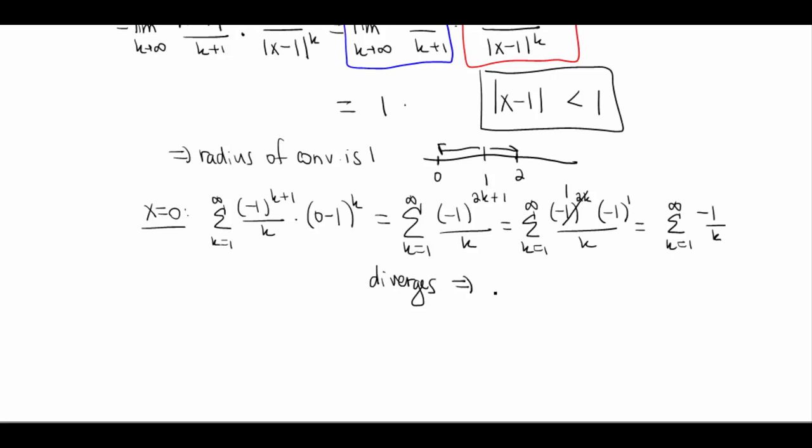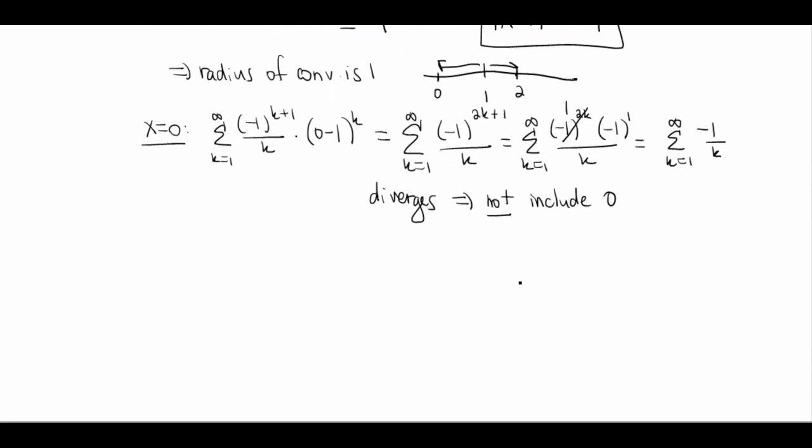So that means we are not gonna include 0. So when I go to write my interval, which I'll do down here at the bottom, we're not gonna include 0. And again, that makes perfect sense because it has an asymptote there. The natural log does. And remember, that's where this whole Taylor series stuff came from.